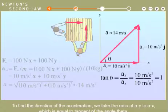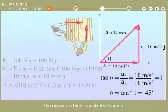To find the direction of the acceleration, we take the ratio of AY and AX, which is equal to tangent of the angle theta. The answer is theta equals 45 degrees.